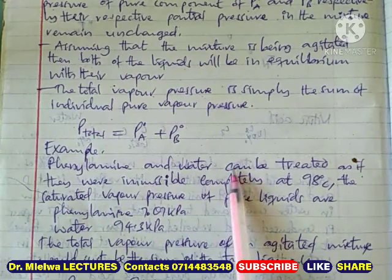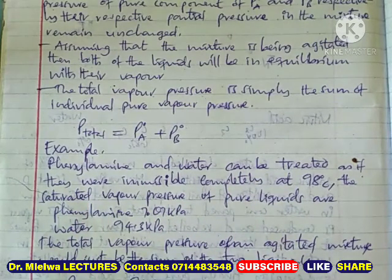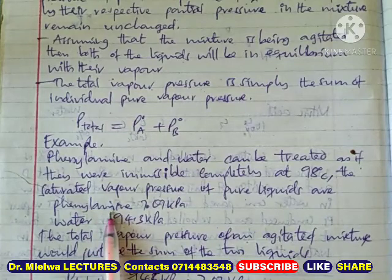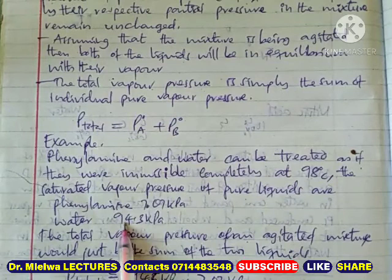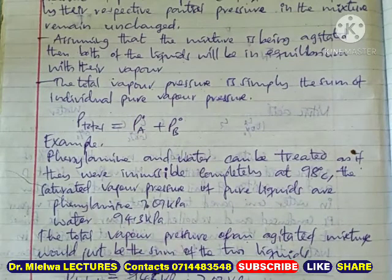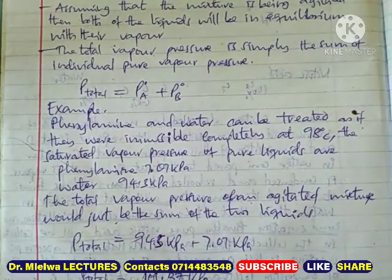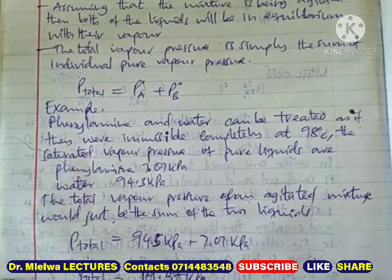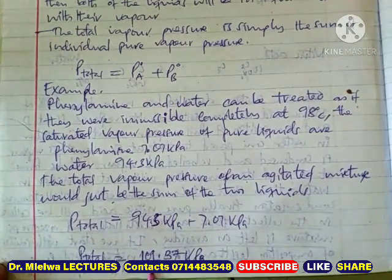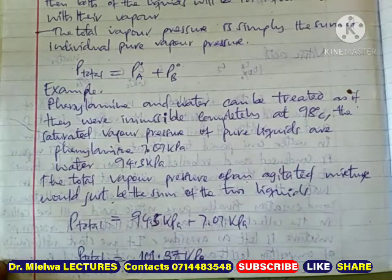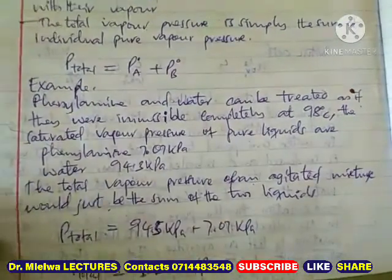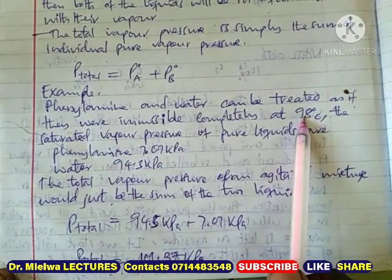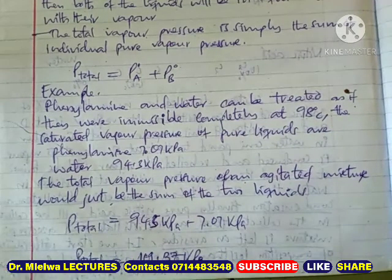For example, phenylamine and water can be treated as if they were completely immiscible. At 98 degrees Celsius, the saturated vapor pressure of pure phenylamine is 7.07 kilopascals and that of water is 94.3 kilopascals. The total vapor pressure of an agitated mixture would just be the sum of the two: 94.3 plus 7.07, giving 101.37 kilopascals. That is the total vapor pressure of the mixture.